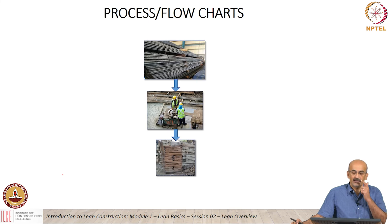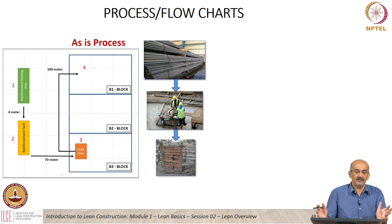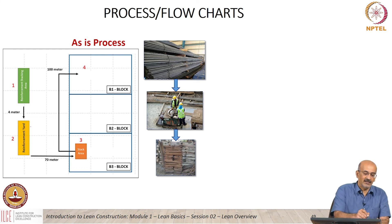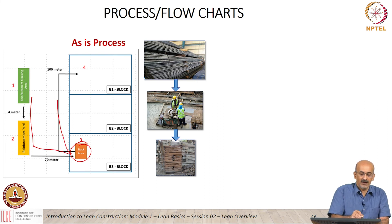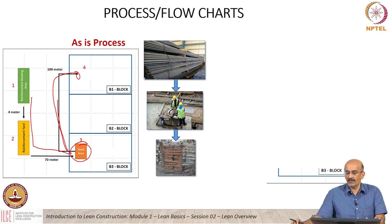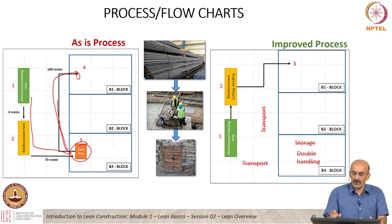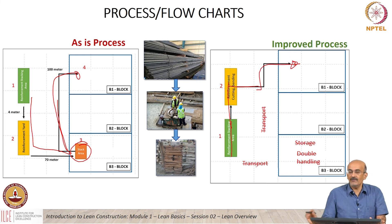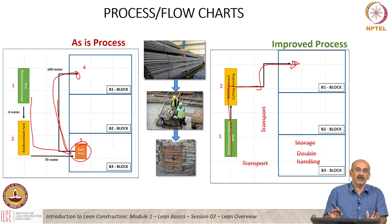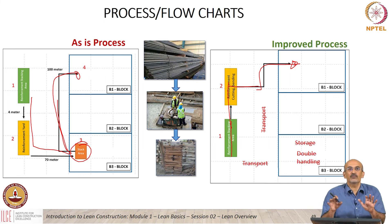Finally, moving to process and flow charts — taking the same rebar yard example, this is an as-is process where reinforcement is stacked in the yard, moved, and then transported to be placed. A process like this can be converted more efficiently into one where reinforcement goes from stacking directly to bending and cutting and then straight for placement, eliminating extra transport, double handling, and storage. Process charts generally look at geographic distribution and transportation that occurs, and try to improve efficiency by eliminating these extra steps which are not adding value.